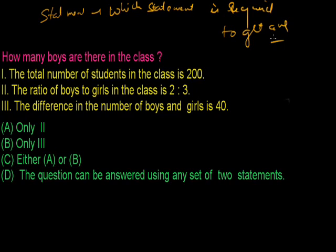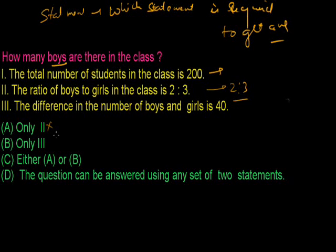How many boys are there in class? Statement 1 says the number of students in class is 200 — from this alone I cannot interpret anything about the number of boys. Statement 2 says the ratio of boys to girls is 2 to 3 — with this option alone I cannot answer either. Statement 3 says the difference in the number of boys and girls is 40 — from this alone I also cannot interpret the number of boys. We have to take all the statements independently first, and individually none are sufficient.